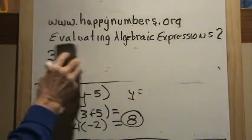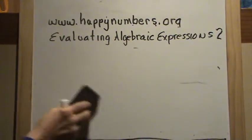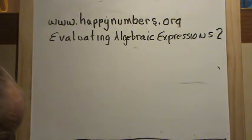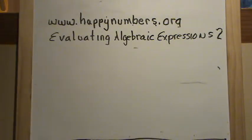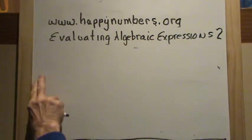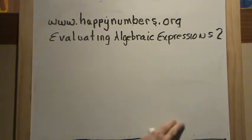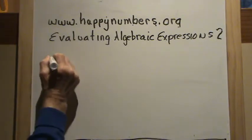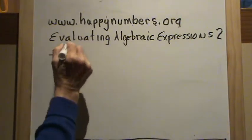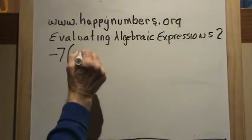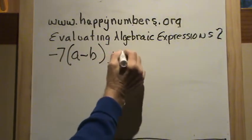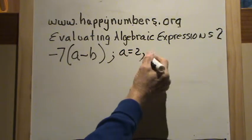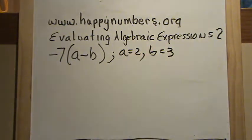If that subtraction of integers — turning a subtraction problem into adding the opposite — confuses you a little, please go back and look at the Subtracting Integers video, because it's an important concept. You can go back and look at any of the videos at any time. Next: negative 7 times the quantity A minus B, and A equals 2, B equals 3. Go ahead and solve that one.